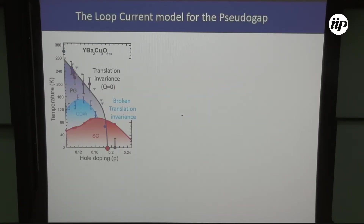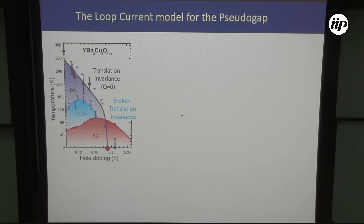Here you have the general phase diagram of cuprates. We start with a Mott insulator state, dope the system, and after adding a small amount of holes in the copper-oxide plane the system becomes a superconductor at low temperature with unconventional d-wave superconductivity. In the normal state, below a temperature called T*, the system develops very anomalous properties — especially a gap or depletion of density of states on the antinodal portion of the Fermi surface. This is the pseudogap phase.